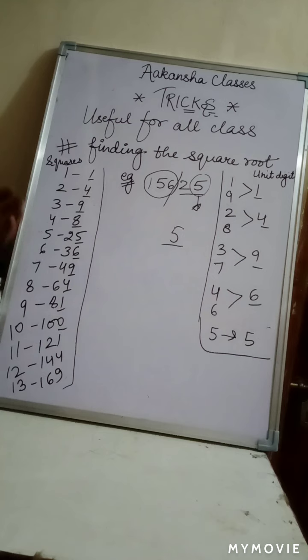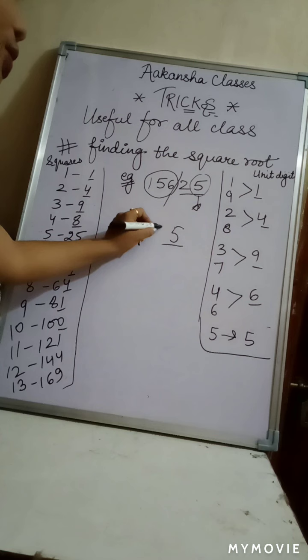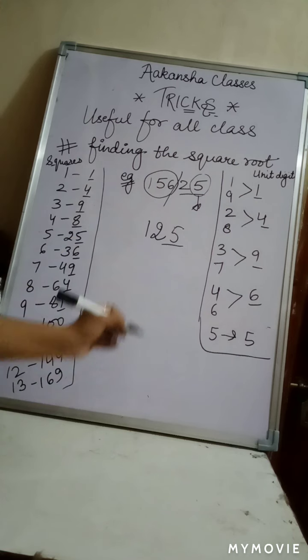So we can see that we will consider that which is our small value. So what will happen here, 125. That means this is 125 square root.